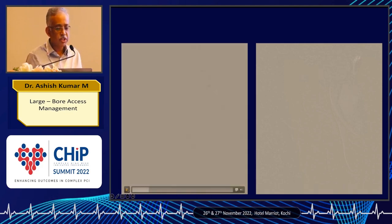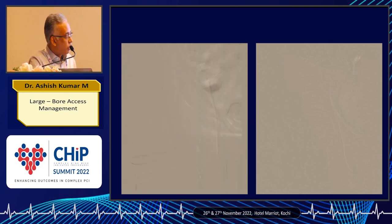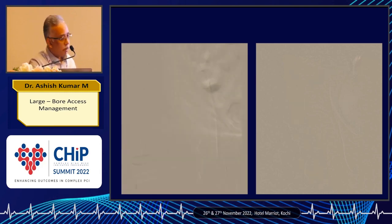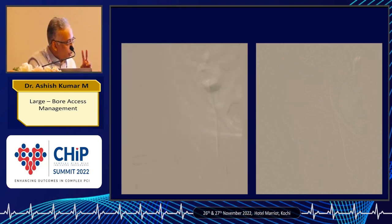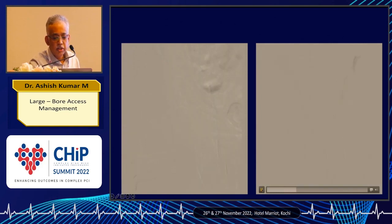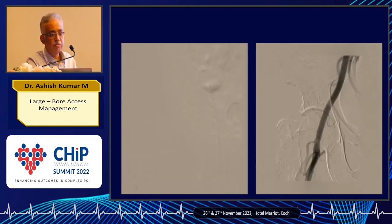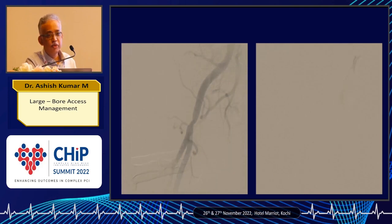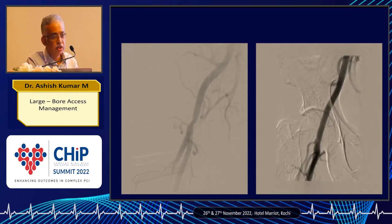For TAVRs, we started using two ProGlides as was the recommendation for 14 to 18 French access. But with two ProGlides you get that indentation at the arteriotomy. We have found that the same procedure can be performed using a single ProGlide, which is more pleasing and is not what the manufacturer suggests for larger sizes.